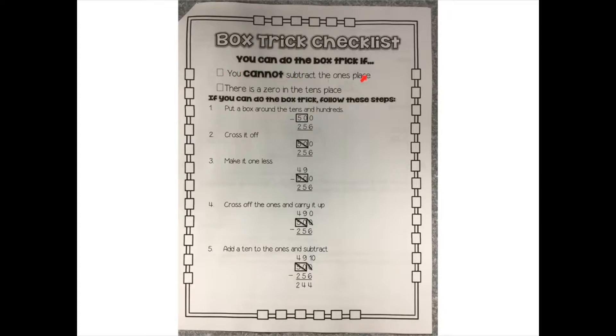These are the reasons why you're going to want to do the box trick. First reason, if you cannot subtract the ones place. So looking at this problem right here, I have 0 minus 6, and there is more on the floor, so I can't subtract without going next door to get ten more. So that's the first thing that has to happen.